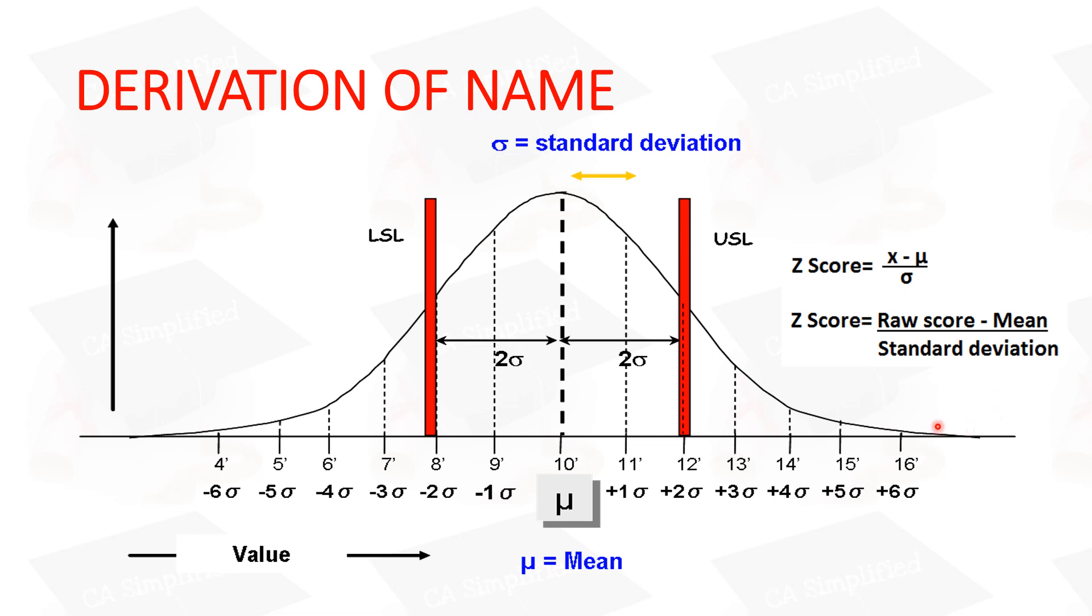So this is the 6 word of Six Sigma, and delta is basically a Greek word. This symbol is the Greek word sigma. And this is the standard deviation. So Six Sigma is basically 6 times sigma, which is the standard deviation. This is the derivation of the word.